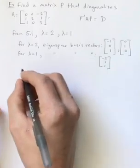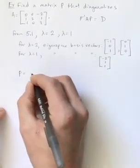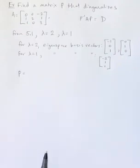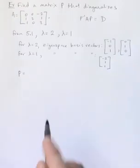So the way to form P is to simply put these as the columns of P. Now, you might ask, does it matter what order I put them in? No, it does not. But you can rearrange that however you want to.